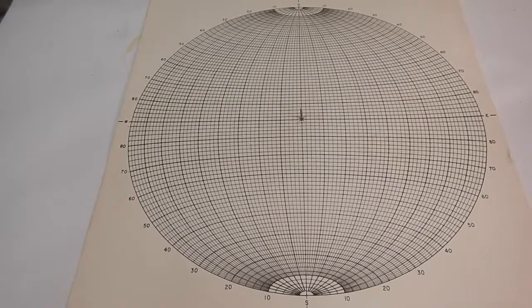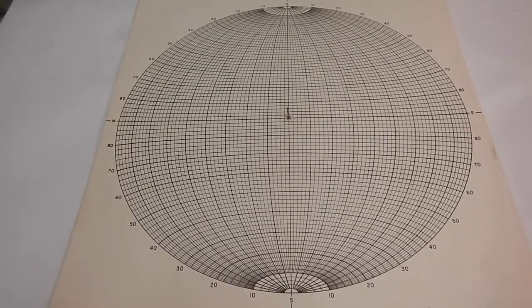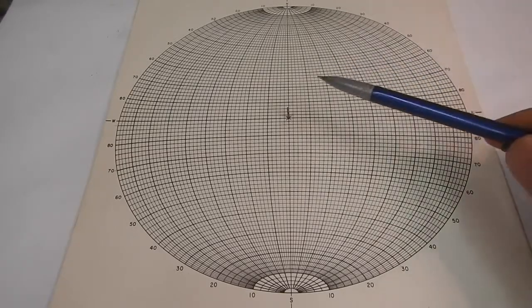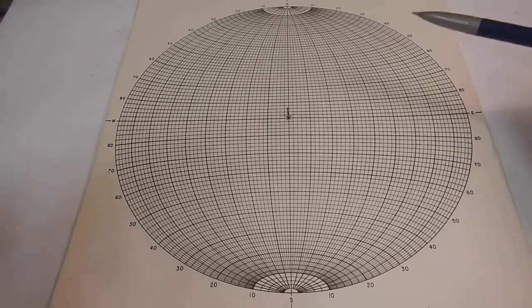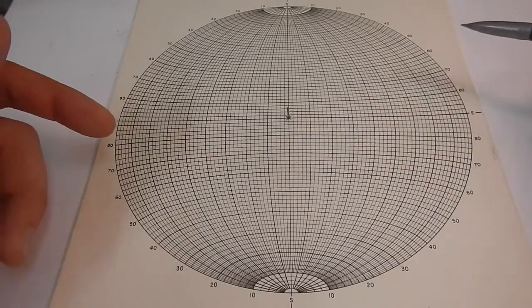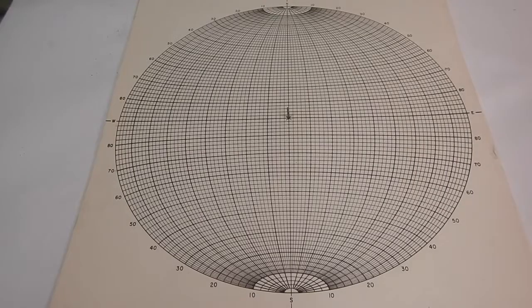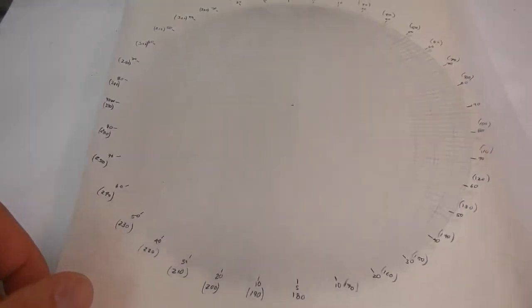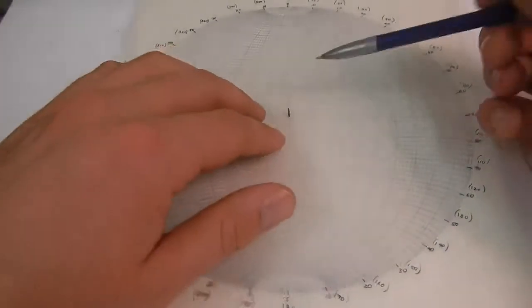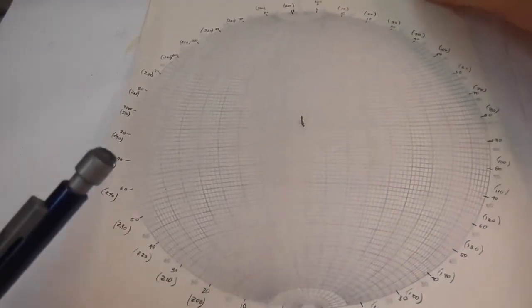So how this usually works is you'll have a hard copy of a stereo net, and then you'll have a needle or a tack sticking up out of it. And we're not actually going to draw on this stereo net, but we're going to put tracing paper on top, so you can keep using it, instead of just using it that one time. So what you do, get your tracing paper, poke a hole, and as you can see, your tracing paper will rotate around the stereo net now.